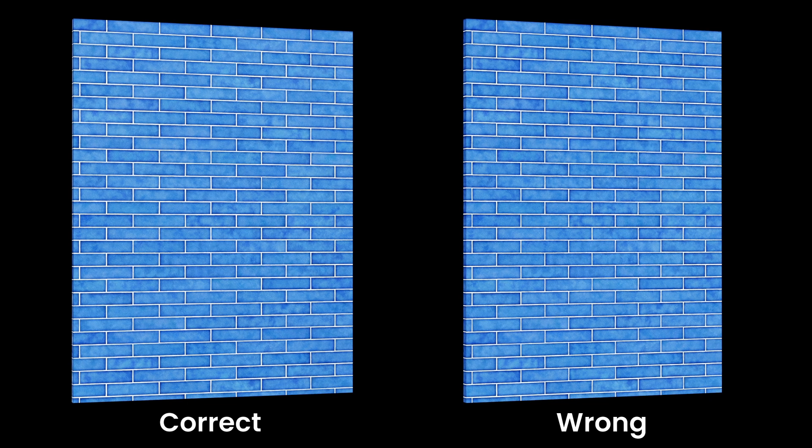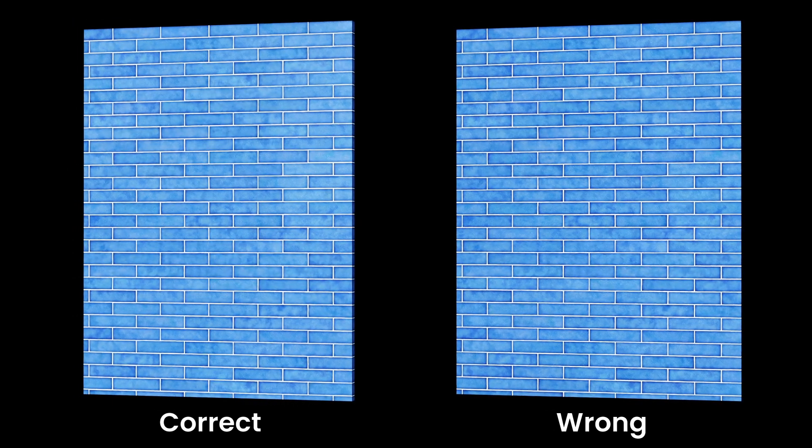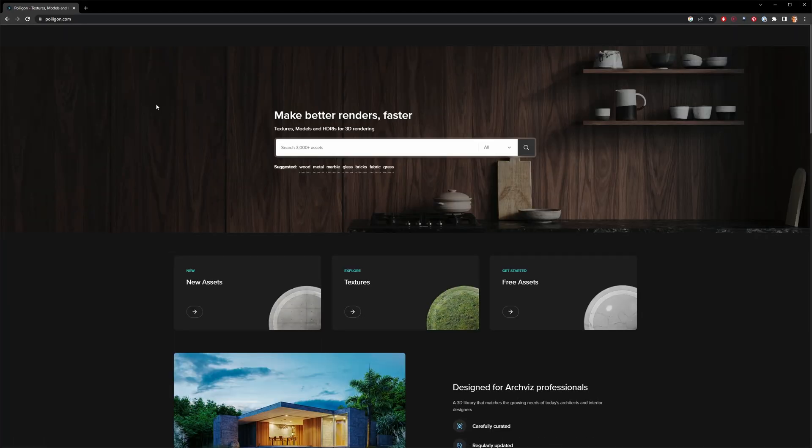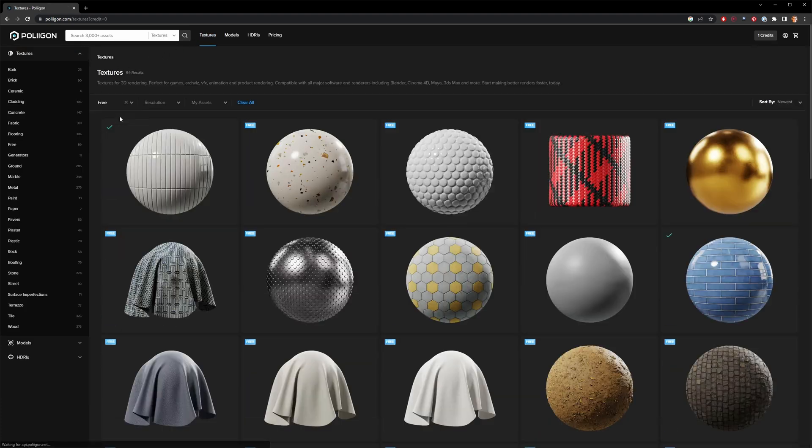Let's say you download textures or 3D assets from a website, and when you go to use them in your render engine, they just don't look nearly as good as the thumbnails did on the website from which you got them. What gives? Well, each render engine is going to do things a little bit differently, so understanding how to use the texture maps correctly is critical to getting great results. Today I'm going to show you how to use textures from a website called Polygon inside of a render engine called Keyshot, which is typically used for product visualization.